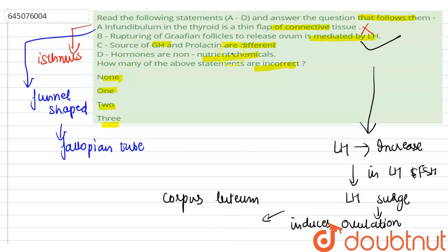Now the third is: source of growth hormone and prolactin are different. This is the incorrect statement because the source for both growth hormone and prolactin is the pituitary gland.